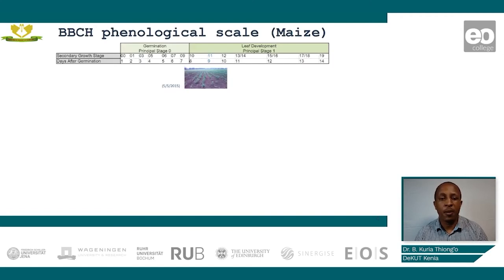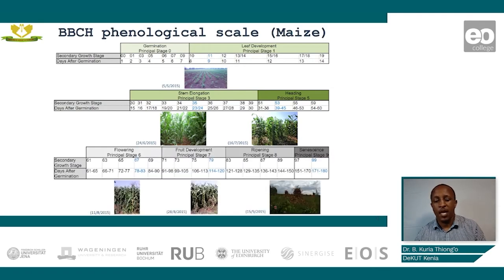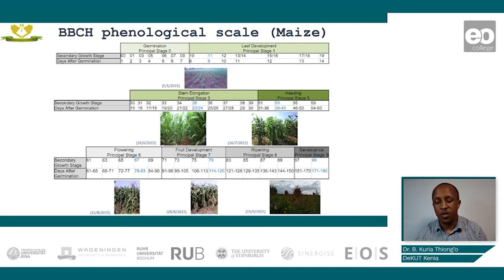The first two primary stages are germination, which is principal stage zero, and leaf development, which is principal stage one. The next stages are stem elongation, which is principal stage three, and heading, which is principal stage five. We then have the flowering stage at principal stage six, fruit development at principal stage seven, ripening at principal stage eight, and finally senescence at principal stage nine.